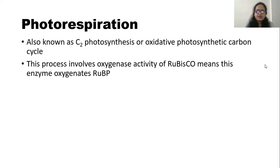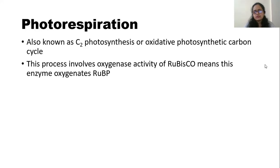In the C3 cycle we discussed its carboxylase activity, while in photorespiration the oxygenase activity of RuBisCO is involved. Since carbon dioxide and oxygen concentrations are nearly equal in the atmosphere, the carboxylase activity of RuBisCO is more favored in order to synthesize carbohydrate in the presence of light during photosynthesis. However, we cannot say RuBisCO is fully specific for CO2.